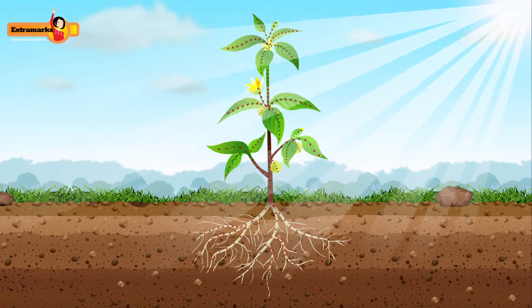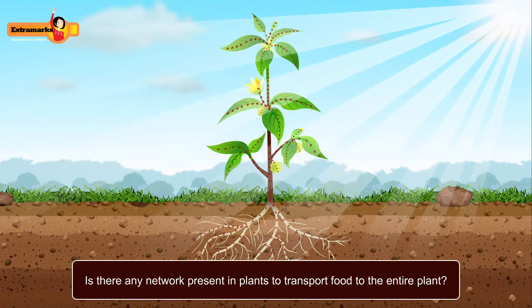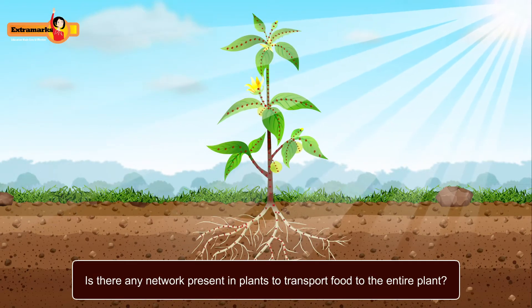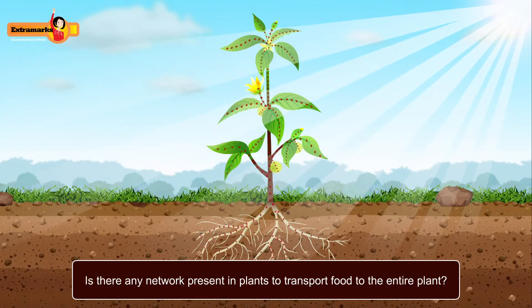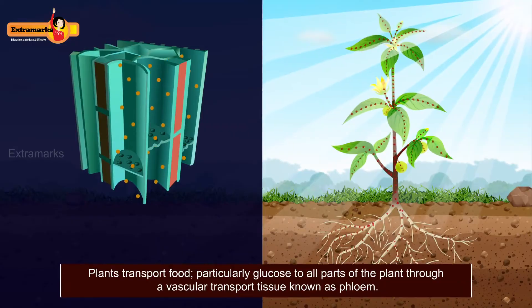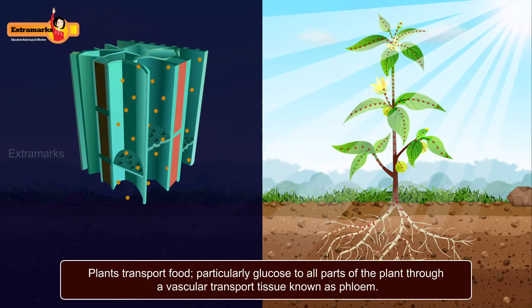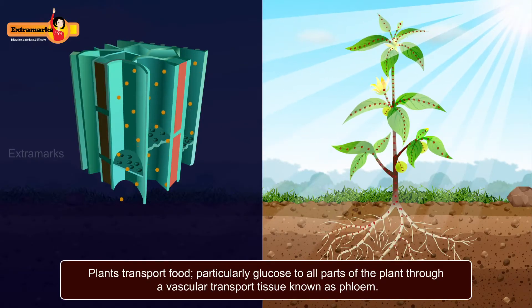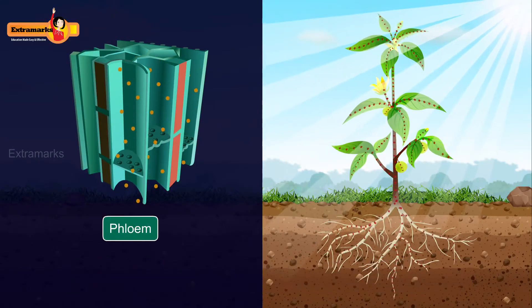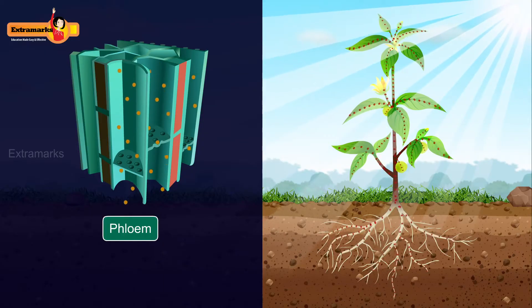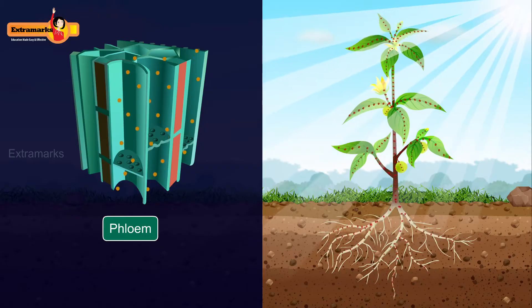The food prepared by the leaves is carried to various parts of a plant. Do you think there is any network present in plants to transport food to its entire body? Yes, plants transport food, particularly glucose, to all parts of the plant through a vascular transport tissue known as phloem.